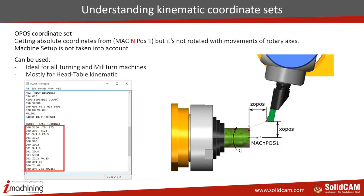The important thing about the O-Pose coordinate is that it's not movable — unlike H-Pose where rotation follows the part, O-Pose is not rotated with the movements of the rotary axis. This is exactly why it's ideal for turning and mill-turn machines. For example, when you have C-axis rotation and the part is rotating, this coordinate system does not follow that rotation — so you always get correct coordinates for the tooltip. It's mostly for head-table machines and mill-turns with a rotary turret.